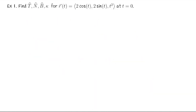In our first example we would like to find the unit tangent, normal, and binormal vectors, and also the curvature for the parametric curve R equals (2 cosine of t, 2 sine of t, t²) at t equals 0. I'm going to work out this problem and try to distinguish when we need to treat these objects as functions of t and when it's safe to plug in t equals 0.